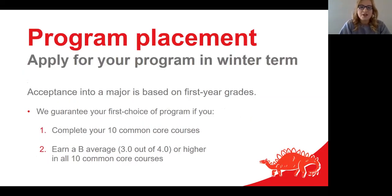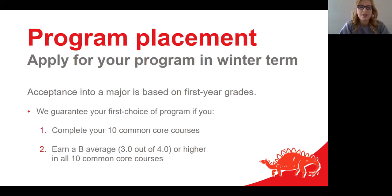While you're in your first year, program placements will take place in the middle of the winter term, and you will decide what engineering program to pursue. You can earn a degree in chemical, civil, electrical, energy, geomatics, mechanical, oil and gas, or software engineering. You will rank programs from most preferred to least preferred and submit those rankings.